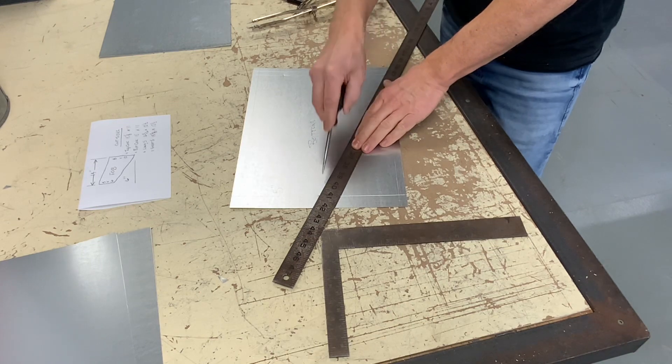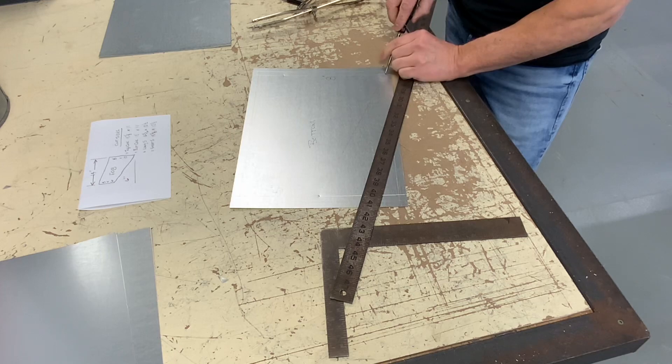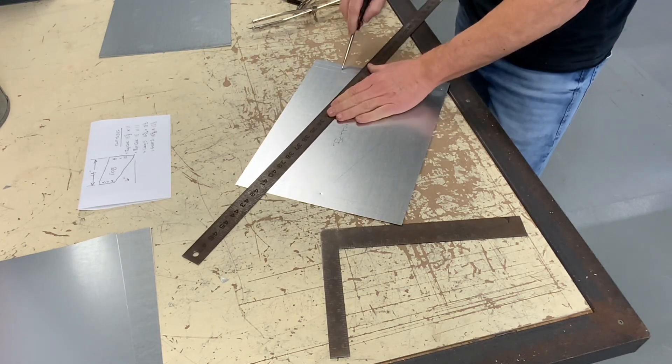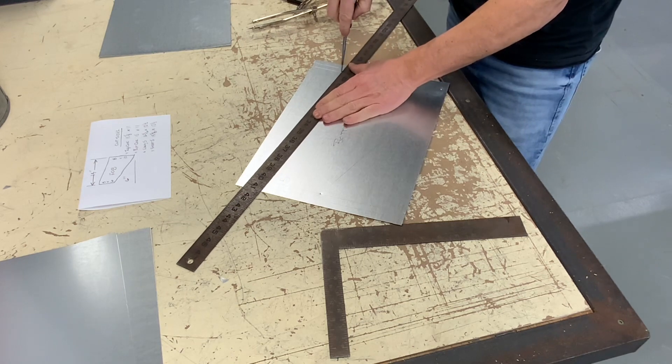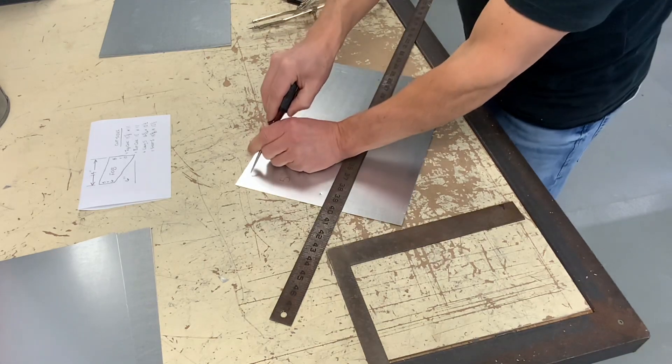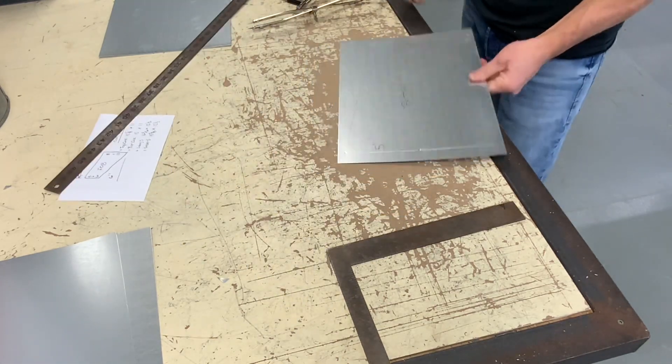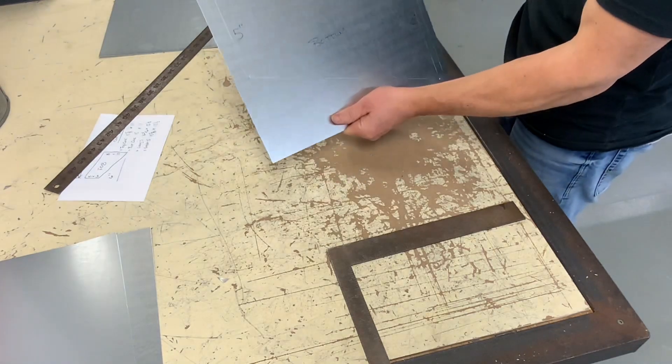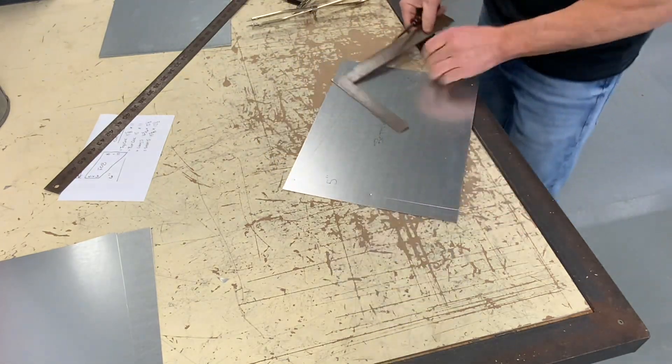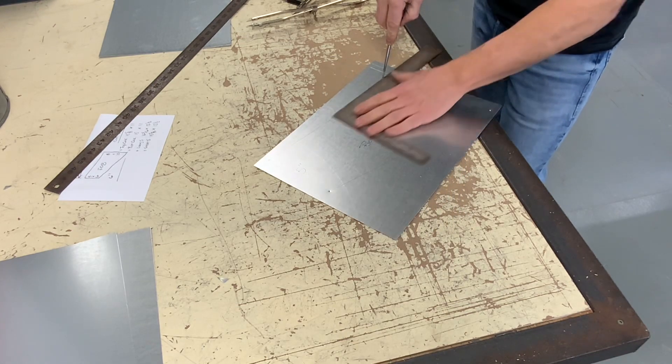I'm now going to scribe to connect the dots and add a half inch on both sides for my male snap lock. I'm going to step out again.